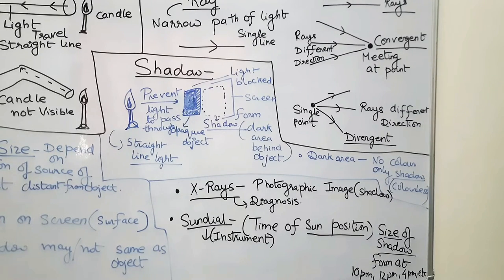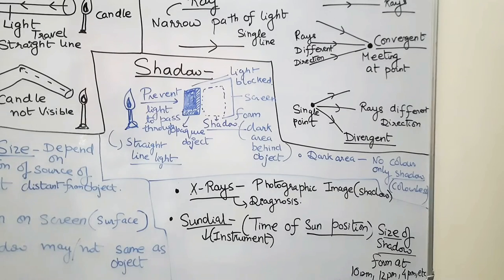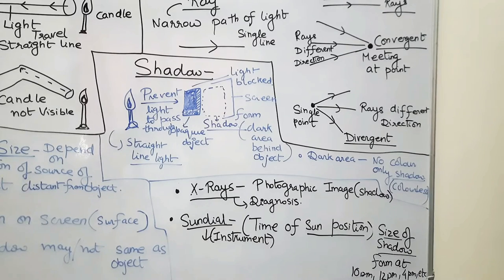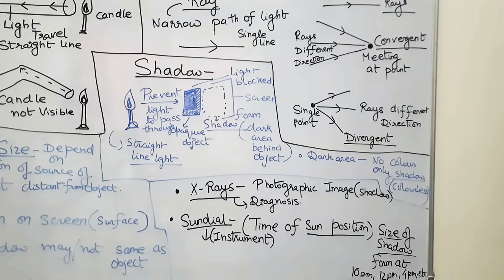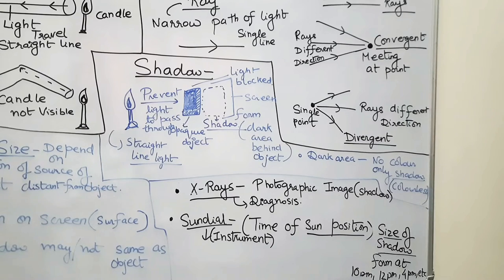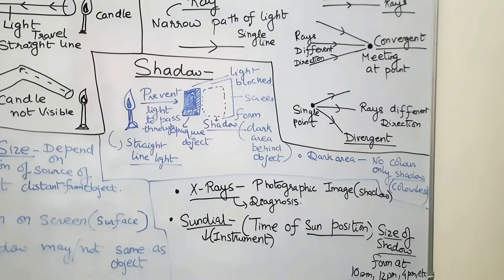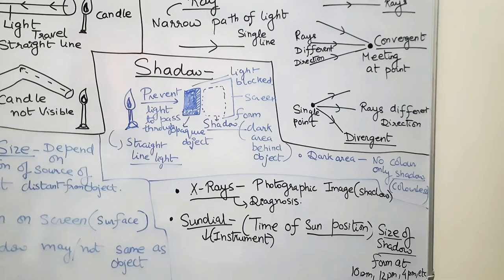A sundial shows us the position of the sun at different times of the day. At 12 p.m. there is a very small shadow. At 10 a.m. there is an east or west shadow. At 4 p.m. the shadow falls on the east side. The sundial is an instrument that indicates the time based on the size and direction of the shadow at a given position of the sun.